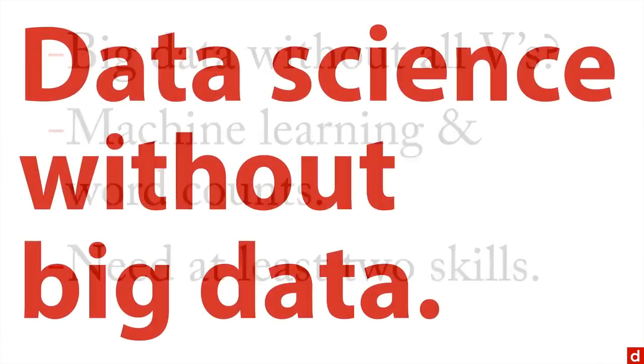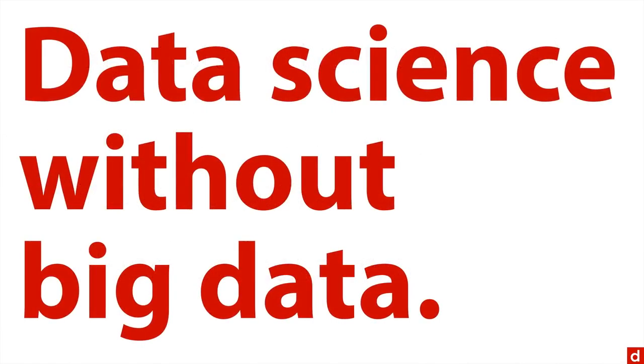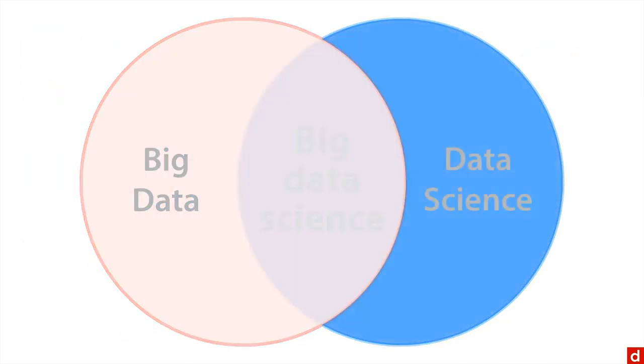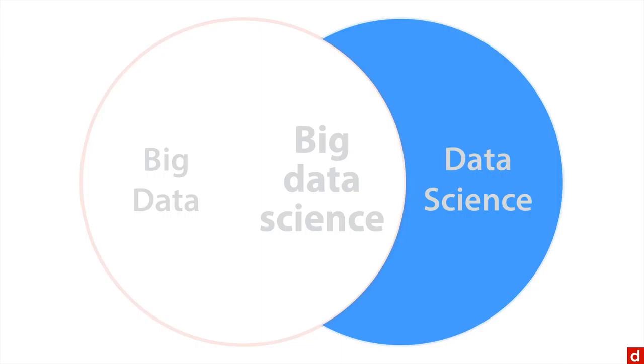So how about data science without big data? That's the right side of this diagram. Well, to make that happen, you're probably talking about data with just one of the three V's from big data. So either volume or velocity or variety, but singly.